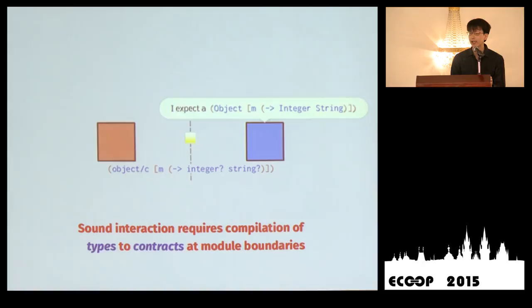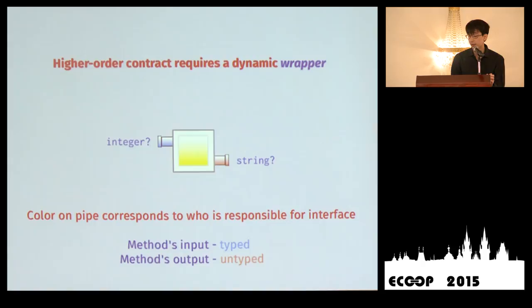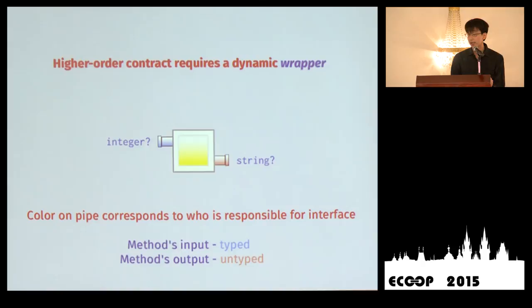If we have a more interesting type — for example, a higher-order type like an object type at the interface — we can't immediately check it. For sound enforcement, we need to delay this check. We use the standard Findler and Felleisen technique of higher-order contracts to turn this contract into a dynamic wrapper. The object ends up wrapped in a contract wrapper that enforces each of the methods. The inputs and outputs of each method get checked with their respective contracts, and the colors show which party is responsible for each part of the interface. That's the dynamic checking part of gradual typing in a nutshell.